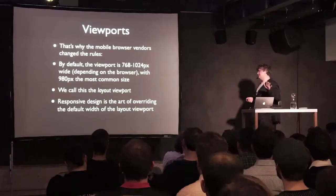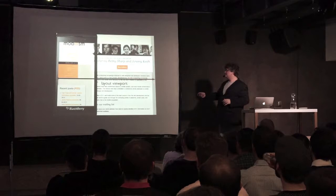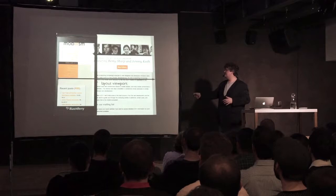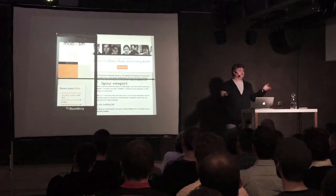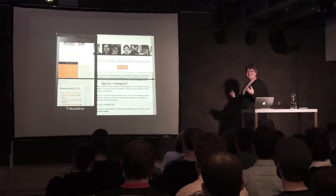That was necessary because a desktop-optimized website requires something like 950 to 1024 pixels. The result is that it stretches out of the browser window on a mobile device. Responsive design, at its basis, is the art of overriding the default width of the layout viewport. The layout viewport is now way wider than the screen — that is deliberate so the CSS layout a desktop-only developer designed would show up at least decently on mobile. It's not great, but it's the least bad thing they could do when there were no mobile-optimized sites yet.